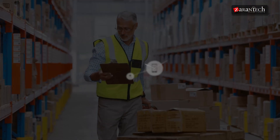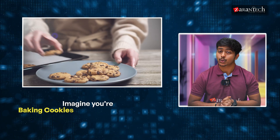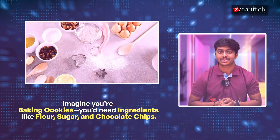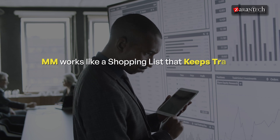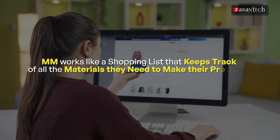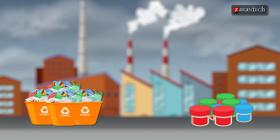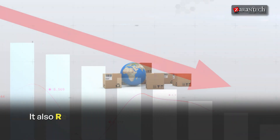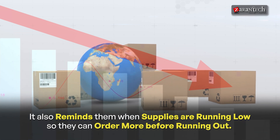Next is Materials Management, or MM. Imagine you are baking cookies — you would need ingredients like flour, sugar, and chocolate chips. For companies, MM works like a shopping list that keeps track of all the materials needed to make their products. If a toy factory needs more plastic or paint, MM helps them find it and buy it. It also reminds them when supplies are running low so they can order more before running out.